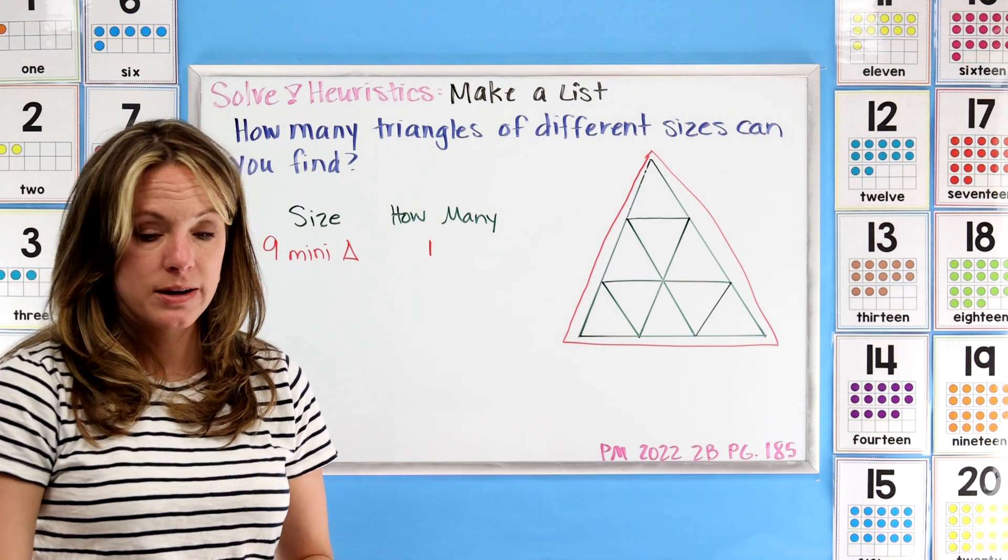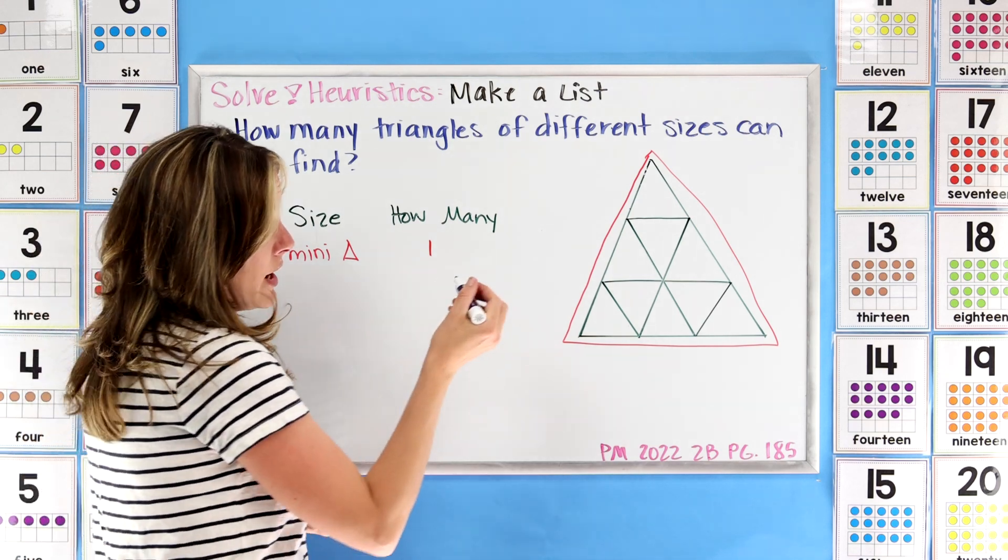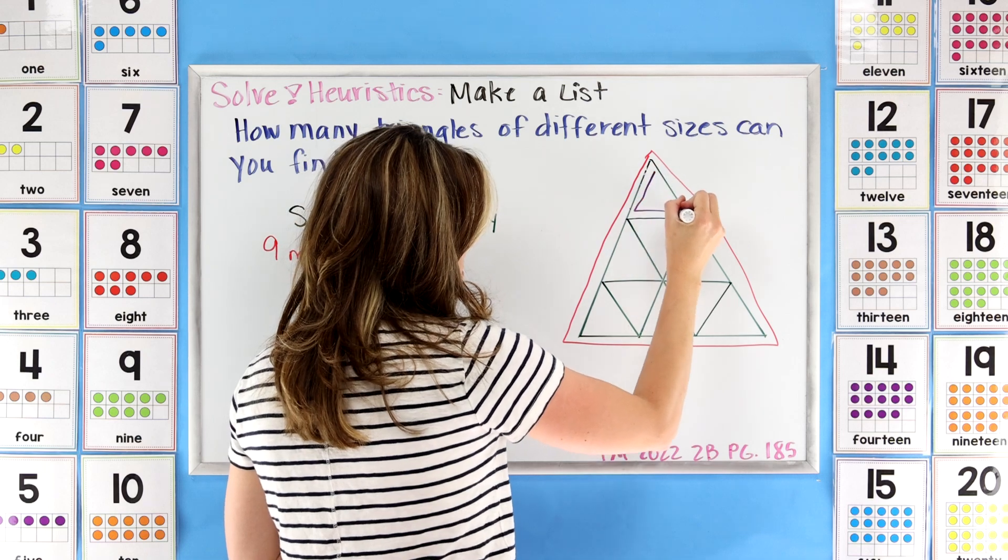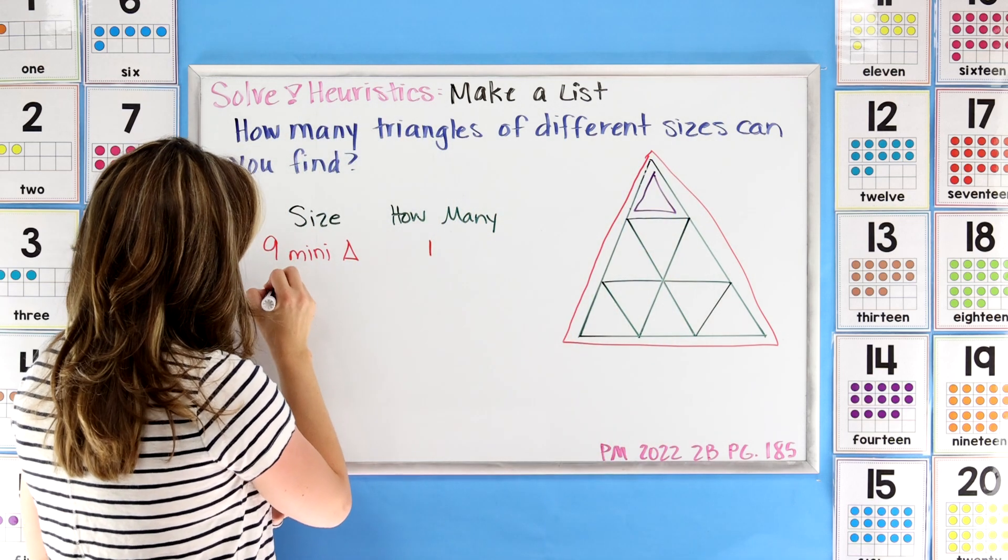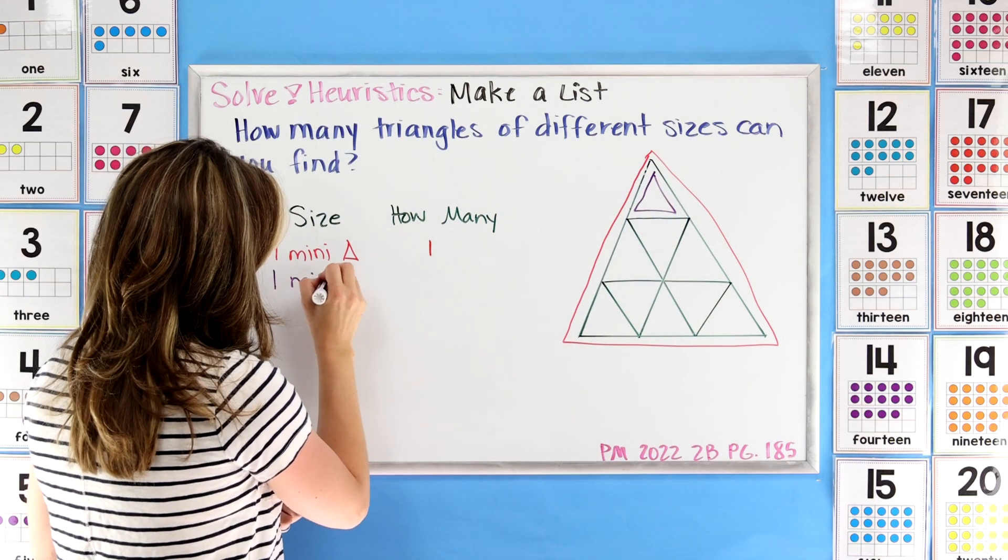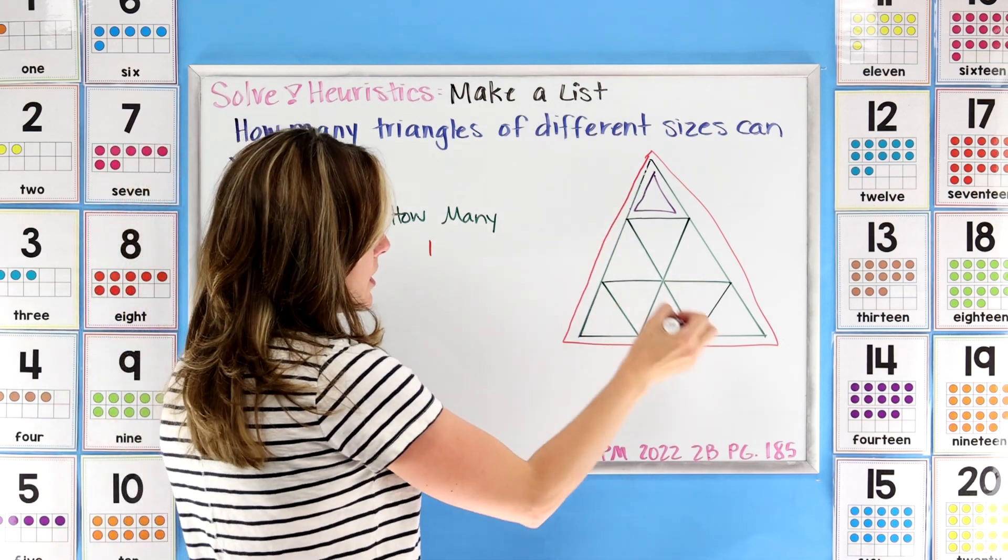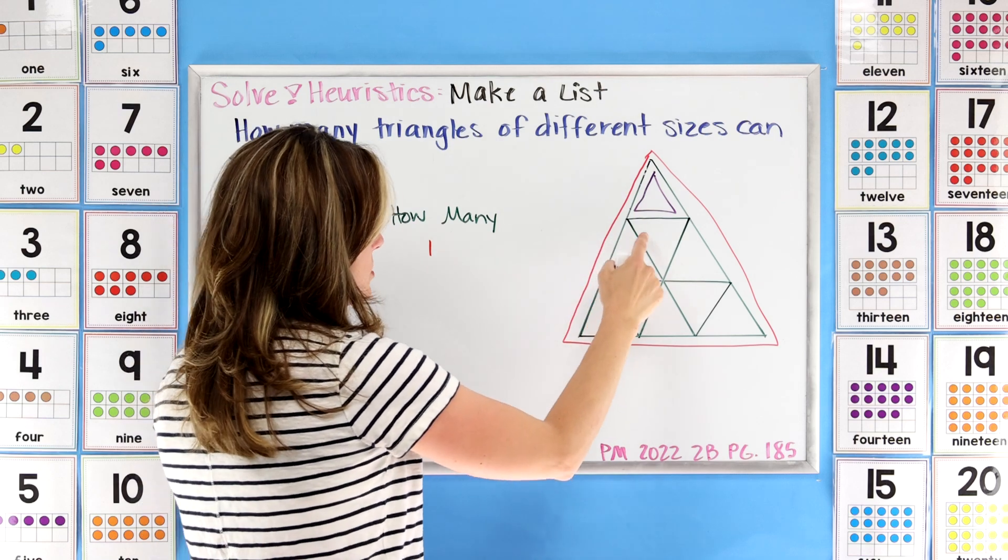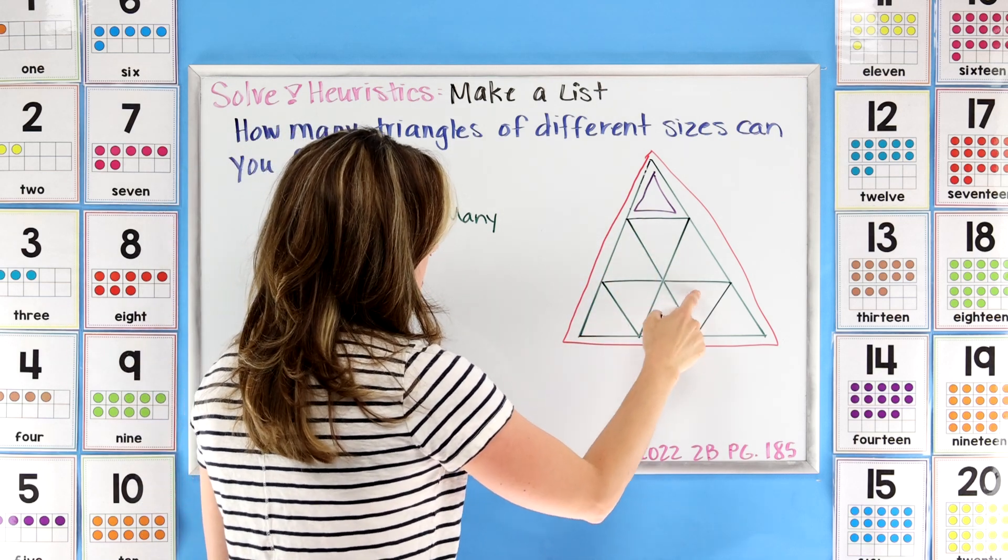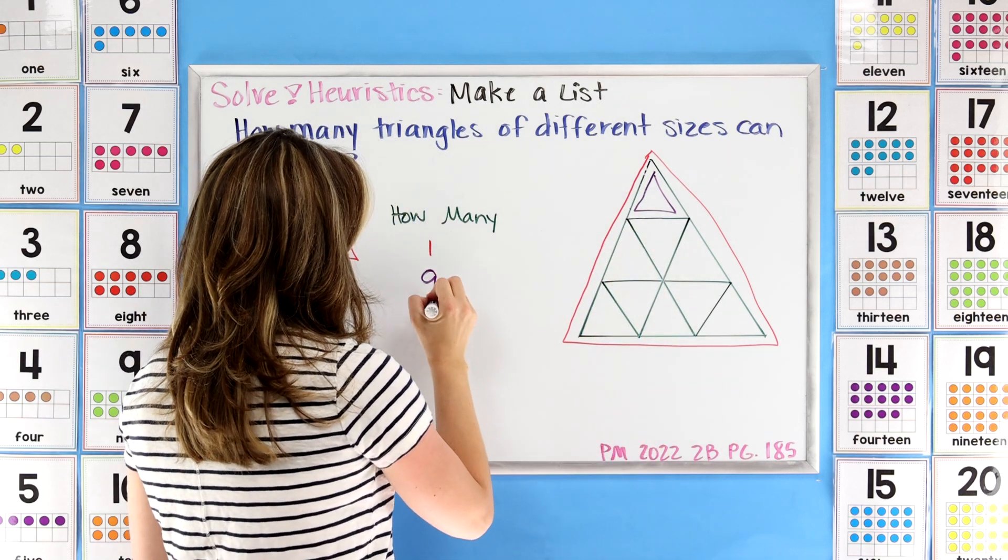Now that brings me to the other one. If we were just to count the mini triangles, just these, right? So I'm actually going to say one mini triangle this time. How many mini triangles are there if you were to count them all up? One, two, three, four, five, six, seven, eight, nine. So now I have nine.